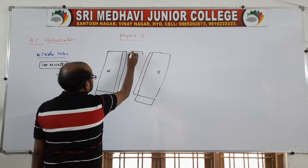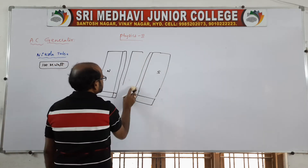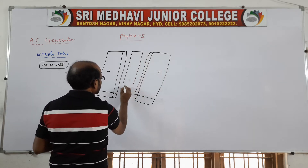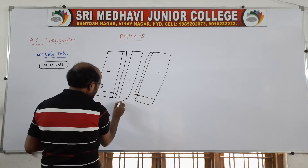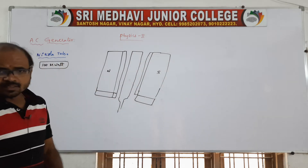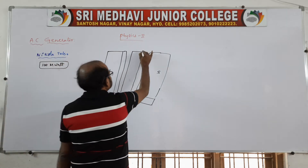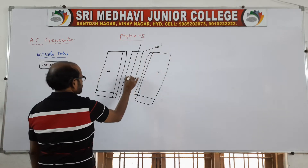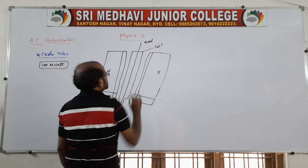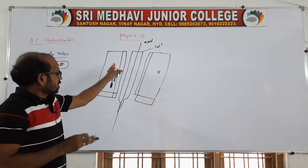Between the two poles, a coil is suspended — a rectangular coil PQRS. With the help of an axle, that coil can be rotated. The coil rotates about the axle, which is like a rod about which the coil spins.